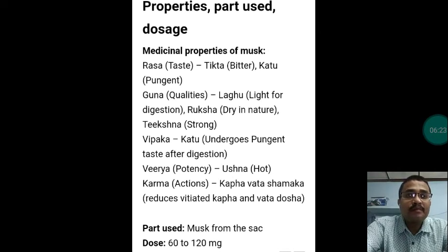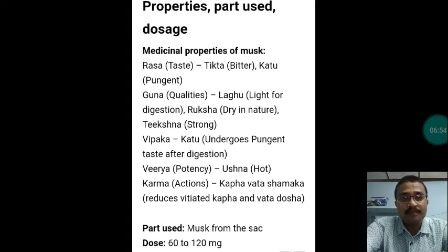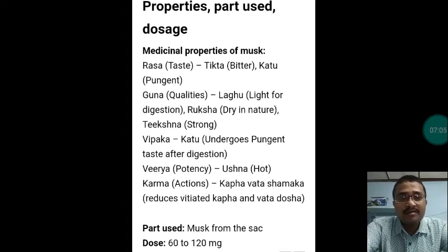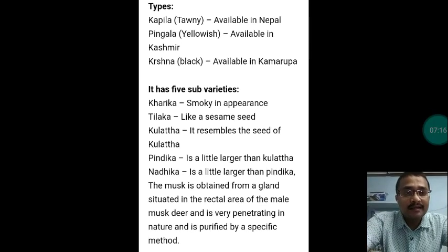Regarding properties and doses: as per Ayurveda, the Rasa (taste) of Kasturi is Tikta-Katu — bitter and pungent. The Guna (qualities) are Laghu, Ruksha, and Tikshna — light for digestion, dry in nature, and strong. Vipaka is Katu — undergoes pungent taste after digestion. Virya (potency) is Ushna (hot). The Karma (actions) are Vata-Kapha Shamaka — it reduces aggravated Kapha and Vata dosha. The part used is musk from the sac, in a dose of 60 to 120 milligrams.